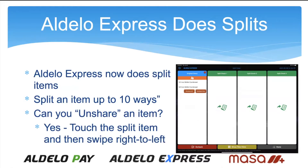If you would like to unshare an item — that is, you split it 10 ways and you only meant to split it nine ways — touch the item, swipe right to left, and you'll get an unshare option: unshare the item or unshare all. And unlike other systems, when you unshare it, it goes back and redoes the math.